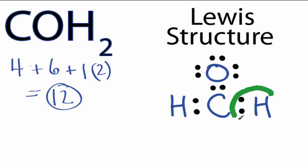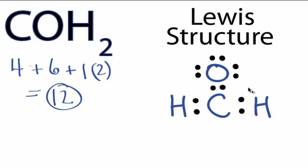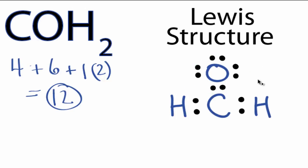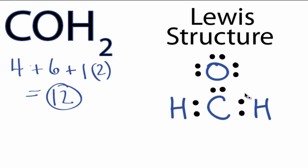At this point, the hydrogens both have 2 valence electrons, so their outer shell is full, and the oxygen has 8, so it has an octet. But the carbon only has 6, so it does not have a full outer shell. What we can do is take 2 of these electrons here from the oxygen and share them with the carbon.